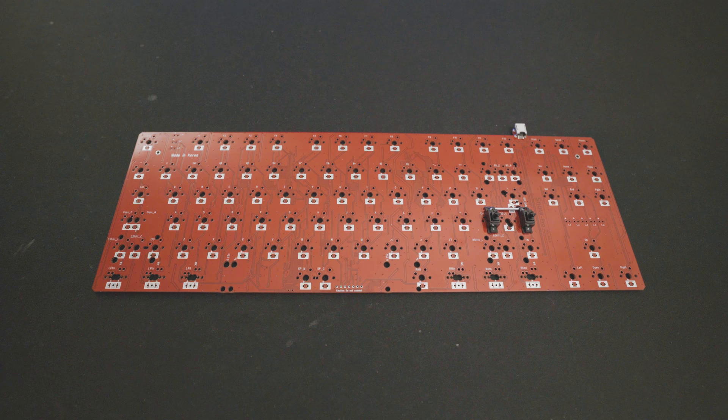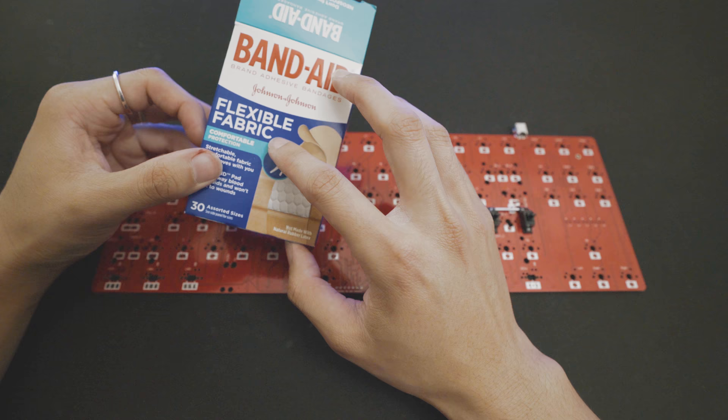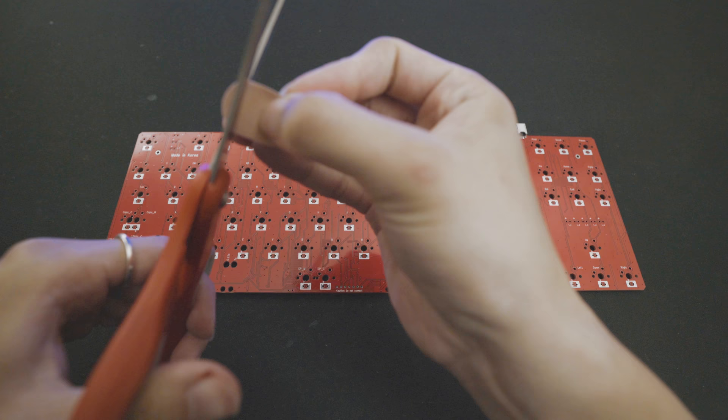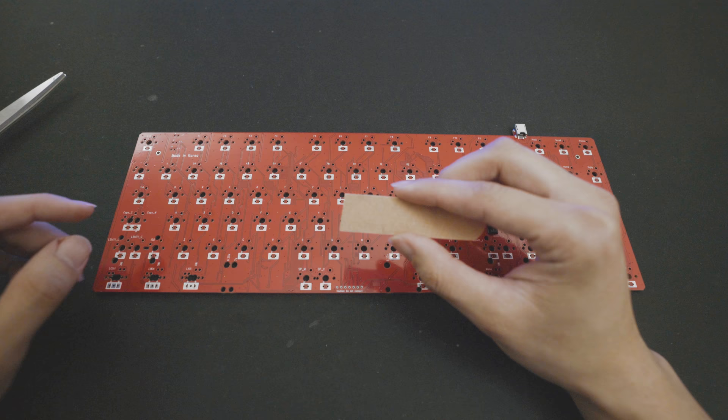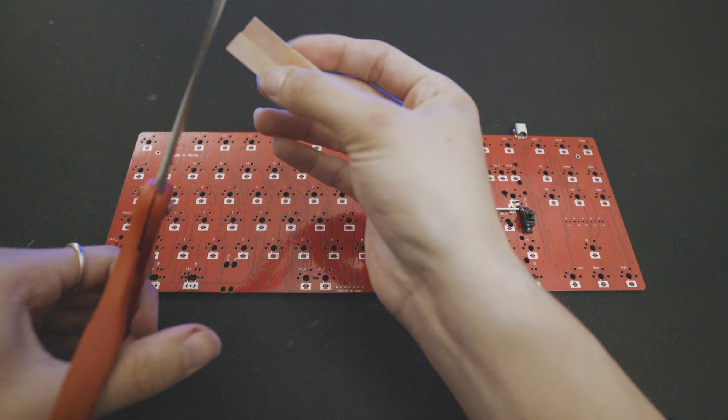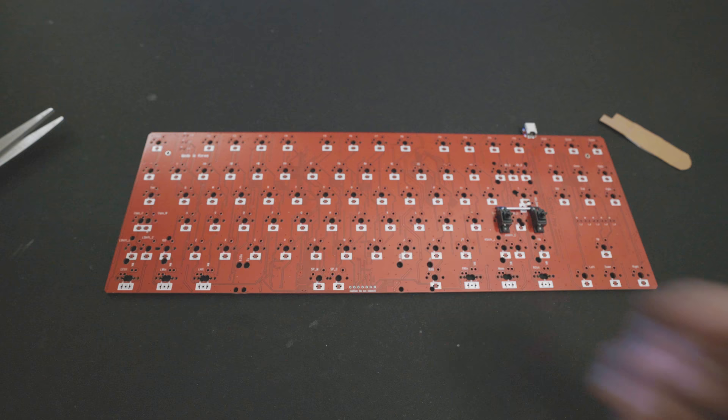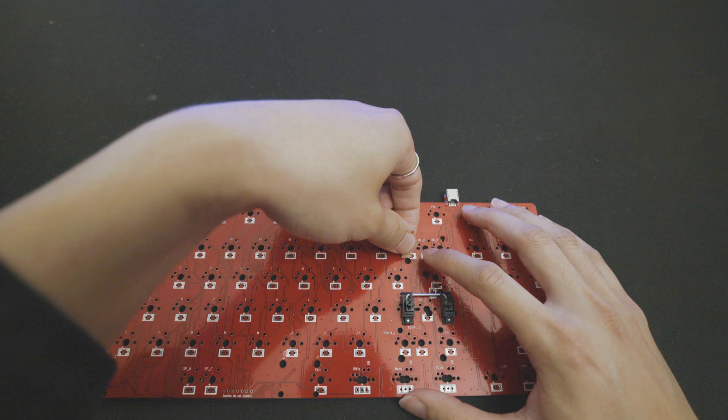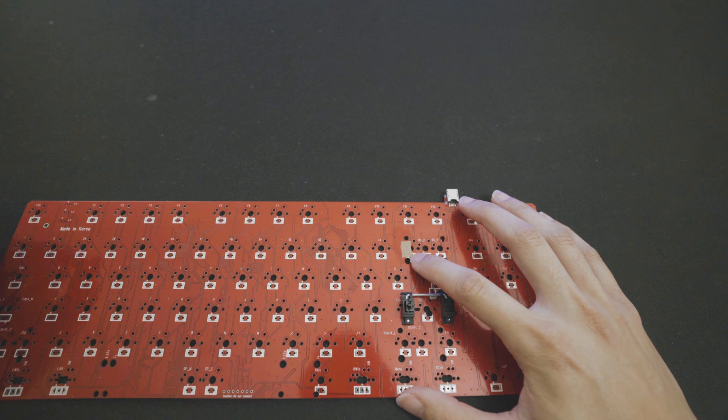The last thing left to do is to perform the band-aid mod. For this, you will need band-aids that are made of fabric. Grab one of the band-aids and cut off the rounded edge. What we're going to do is cut off rectangles from this band-aid that are long enough to fill the areas where the stabilizers will rest. Like so. Make sure that the band-aid is wide enough to cover the entire stabilizer.